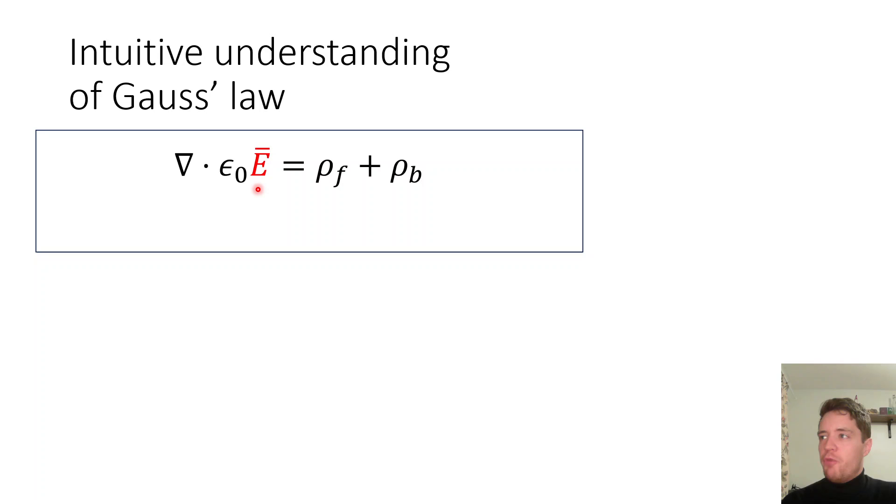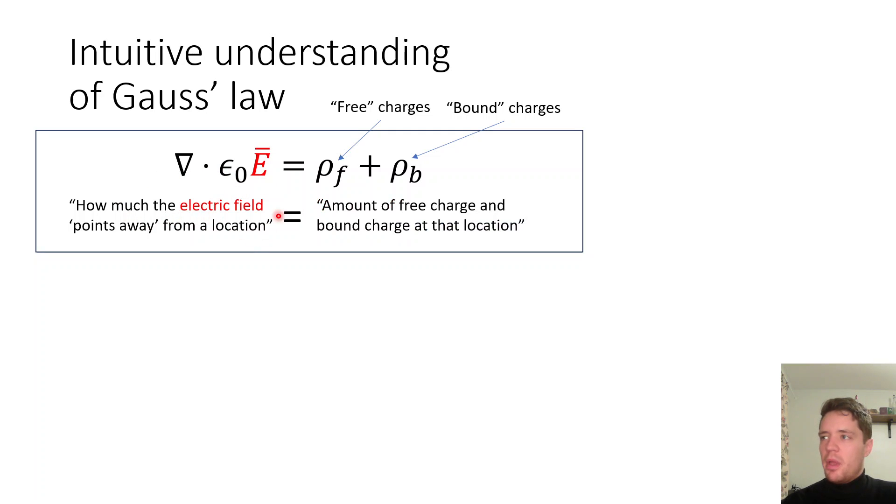Let us begin by gaining an intuitive understanding of Gauss's law. Mathematically, it says that the divergence of the E-field is equal to the free charge density plus the bound charge density. In plain English, it means that how much the E-field is streaming away from a given location depends on the amount of free charge and bound charge at that location.